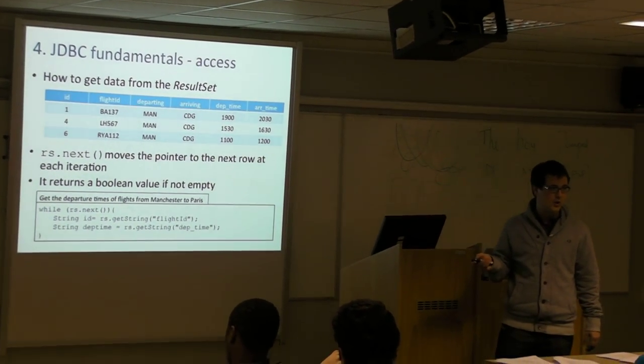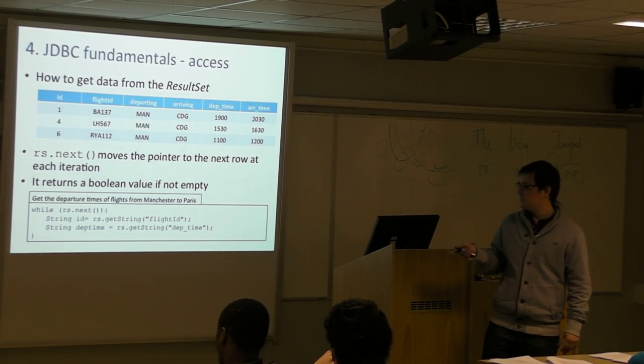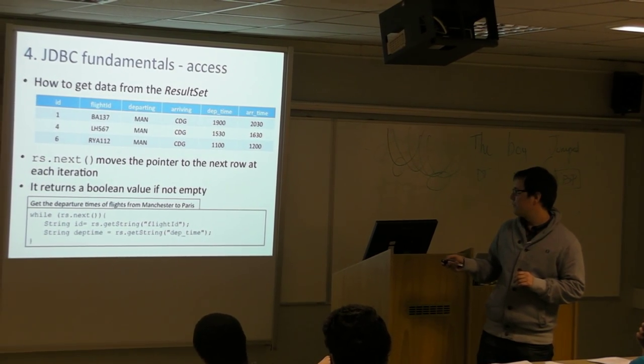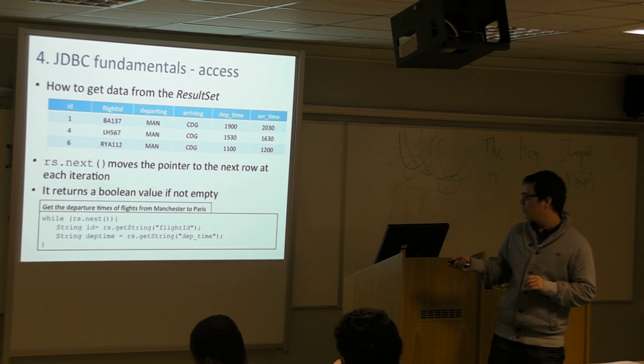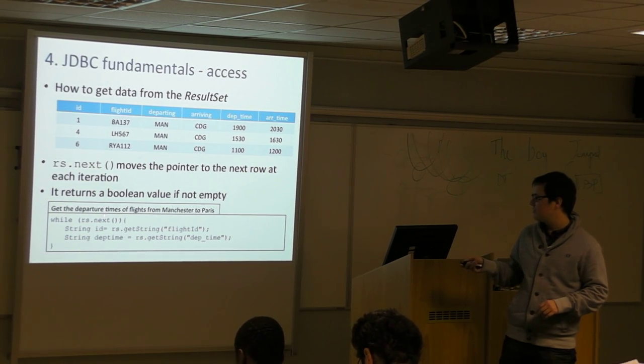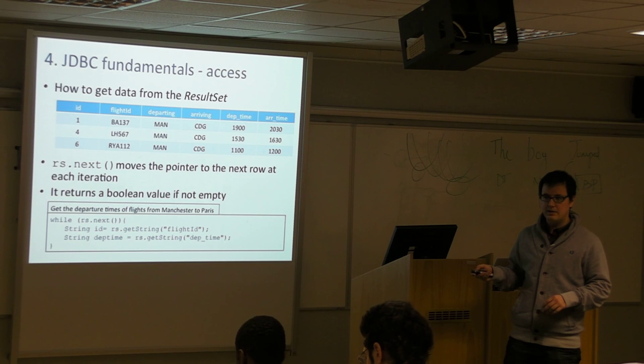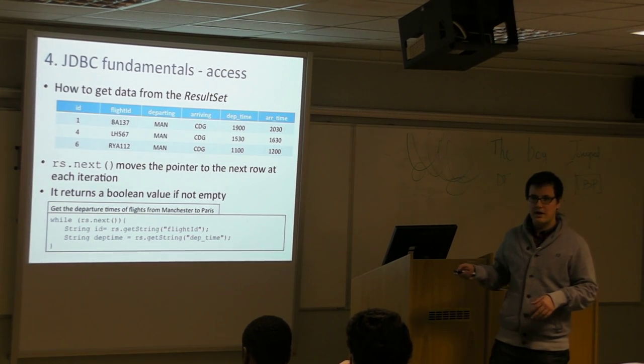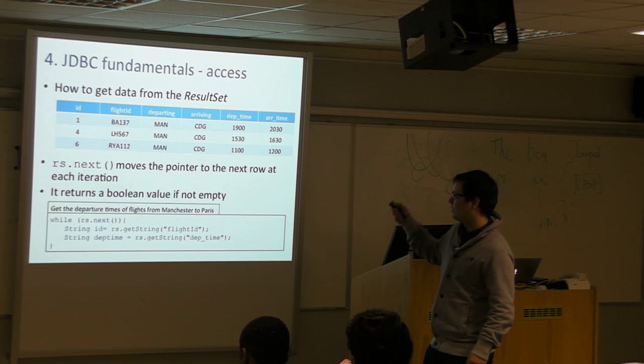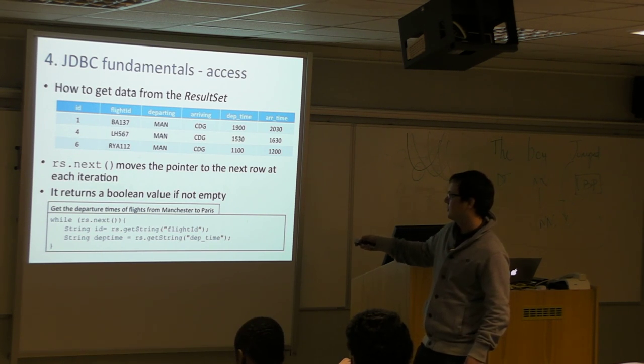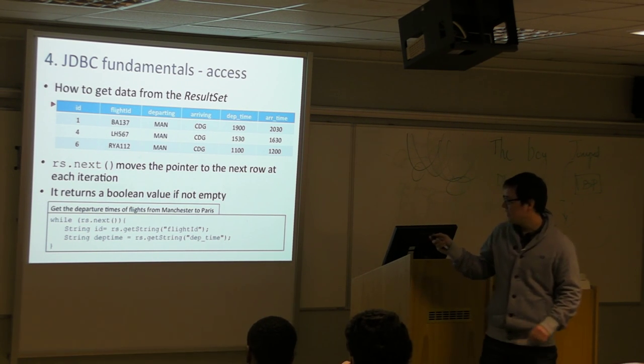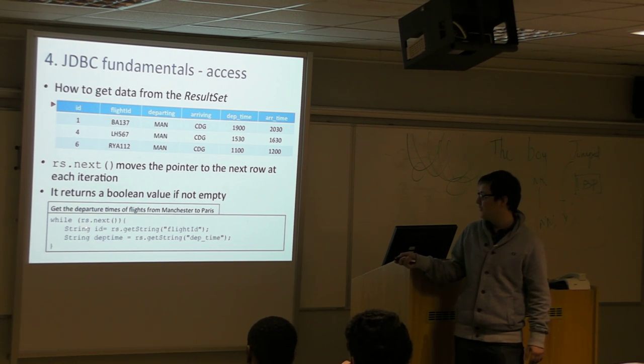ResultSet has a method called next. This is a pointer to each row of the table you have retrieved. We normally put it in an iteration because the result of applying this method is a boolean value. It will give us true while the pointer shows data. If the pointer comes to the end of the rows, it will give false, meaning we don't have more data to process.